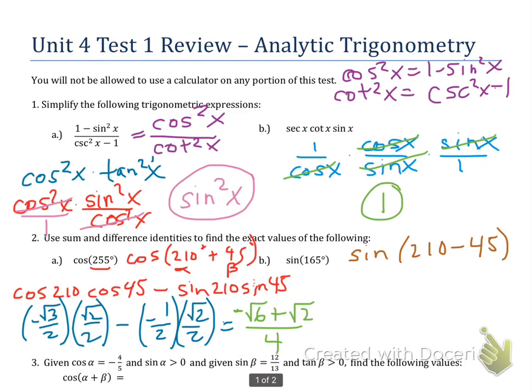So now I'm going to use the sine identity, but I'm going to do the difference one. So I'm going to rewrite this. I'm going to replace it with the identity, and again, alpha is 210, beta is 45.